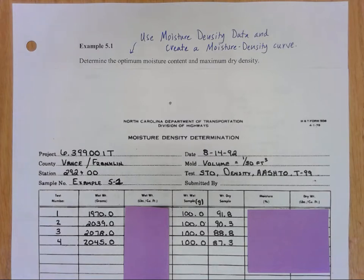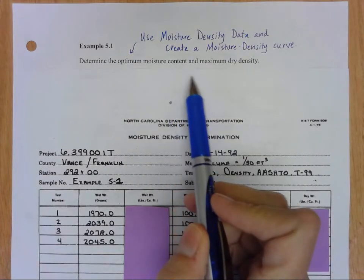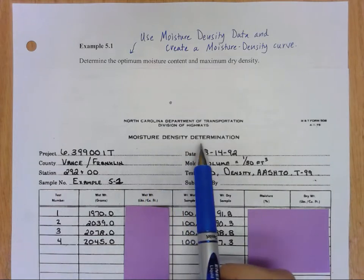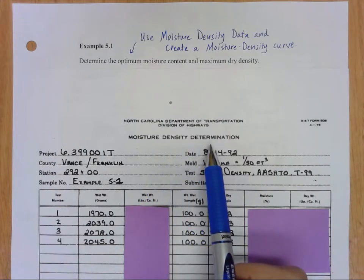Let's pick up here with example 5.1 where we're going to determine the optimum moisture content and the maximum dry density. And to do that we'll use this moisture density determination data sheet that we have provided.